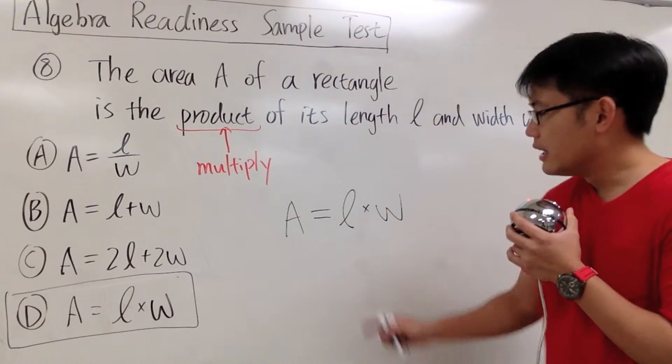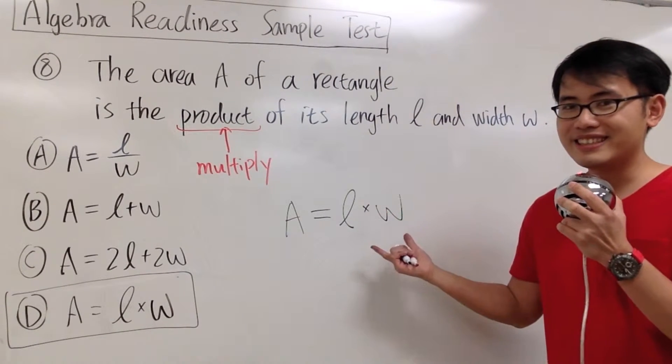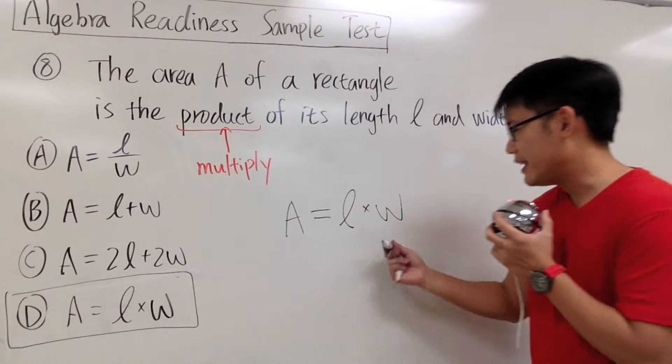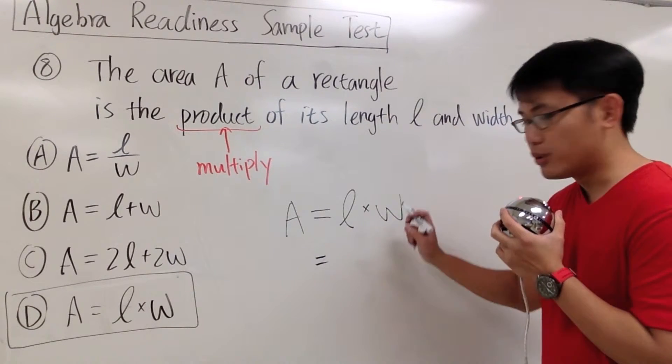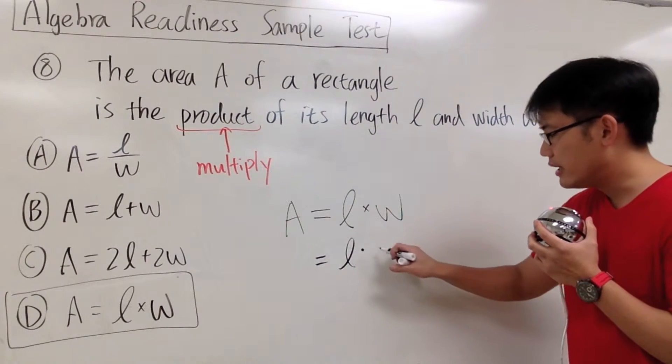And I also want to make a small remark. You see how I use the little cross right here for multiplications? That's the traditional way, right? But in algebra, we can also write this expression as L with a dot in the middle, and then W.